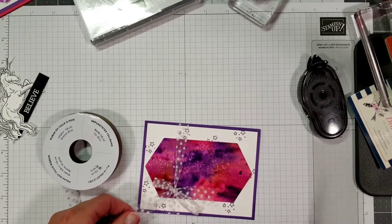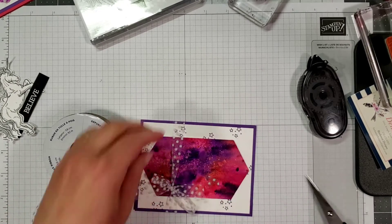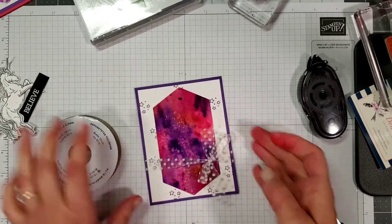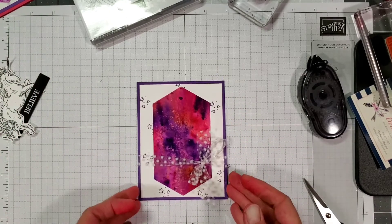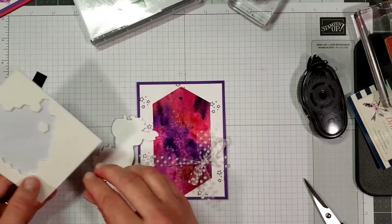Take our scissors again and just cut these little tails off. Now we're going to take the unicorn and some stampin dimensionals on the back of it.